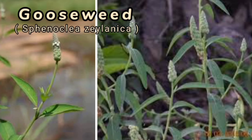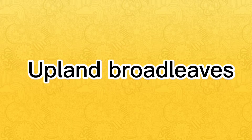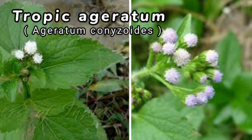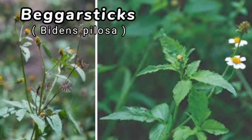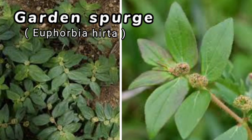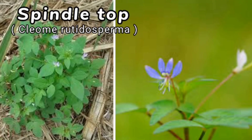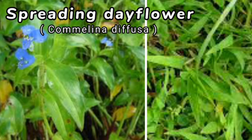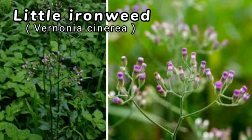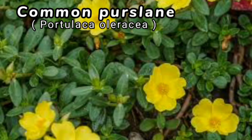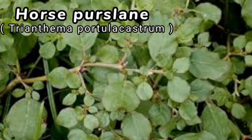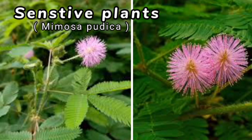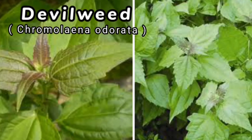Broadleaf that belong to upland are Spiny Amaranth, Slender Amaranth, Tropic Ageratum, Beggar Stick, Garden Spurge, Spindletop, Dayflower, Spreading Dayflower, Little Ironweed, Common Purslane, Horse Purslane, Lantana, Three-Lobe Morning Glory, Sensitive Plants, and Devil Weed.